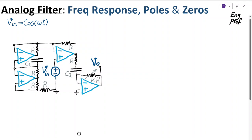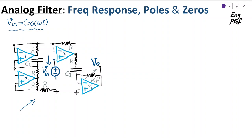An active analog filter is shown, designed here using four ideal op-amps: op-amp 1, 2, 3, and 4, with voltage being applied at this node. This voltage is equal to cosine(ωt), basically a sinusoidal input.